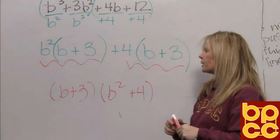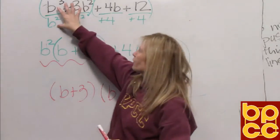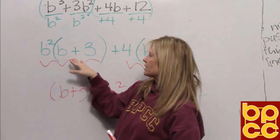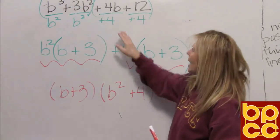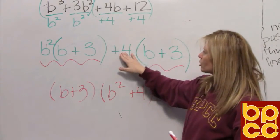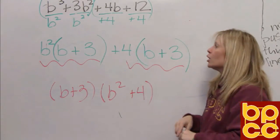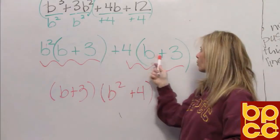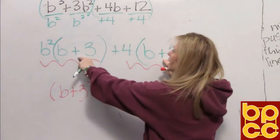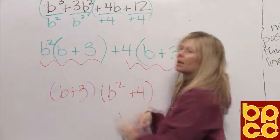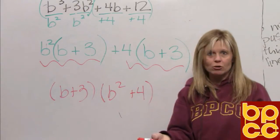So when we do grouping, after we pull out the GCF of the first two terms and tell me what's left, and after we pull out the GCF of the second two terms and tell me what's left, you should be guaranteed to get two parentheses that look identical. If these parentheses did not look the same, that would tell you you factored wrong.